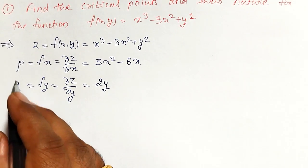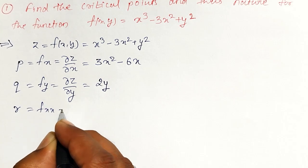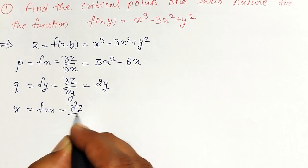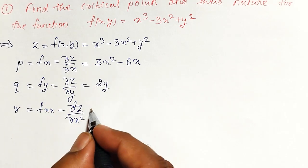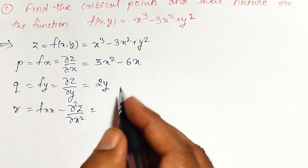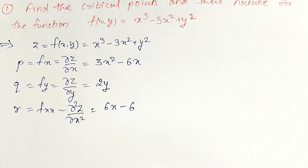Third derivative, that is r, that is fxx or partial square z by partial x square. p, again I have to differentiate with respect to x. It will give you partial square z by partial x square. That is 6x minus 6. It is my r.